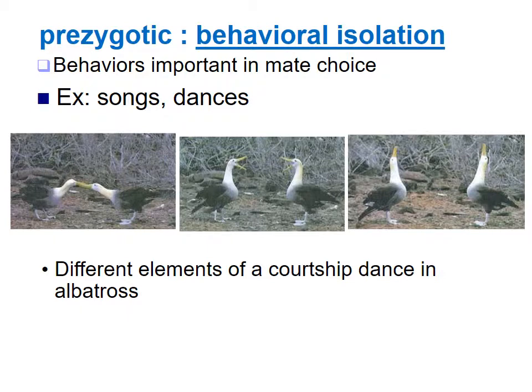Behavioral isolation involves behaviors important in mate choice, like songs or dances. There are pictures showing courtship dance in the albatross — if they don't do the right song or dance they don't get to mate and don't reproduce. This is still prezygotic because it occurs before the zygote forms.